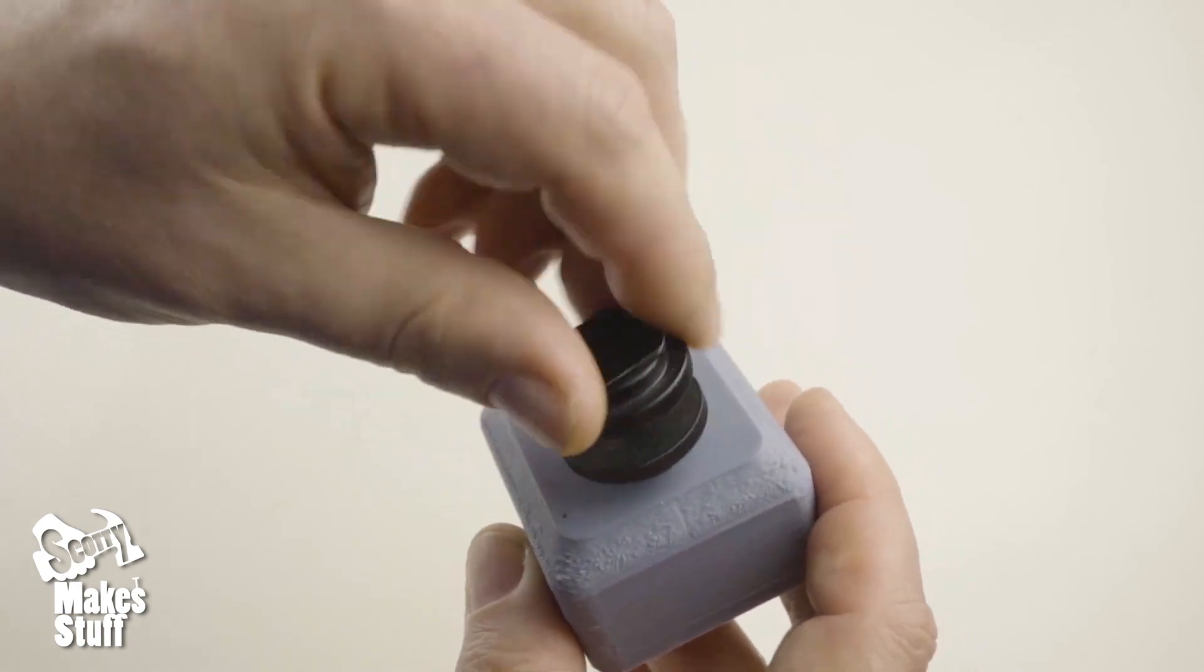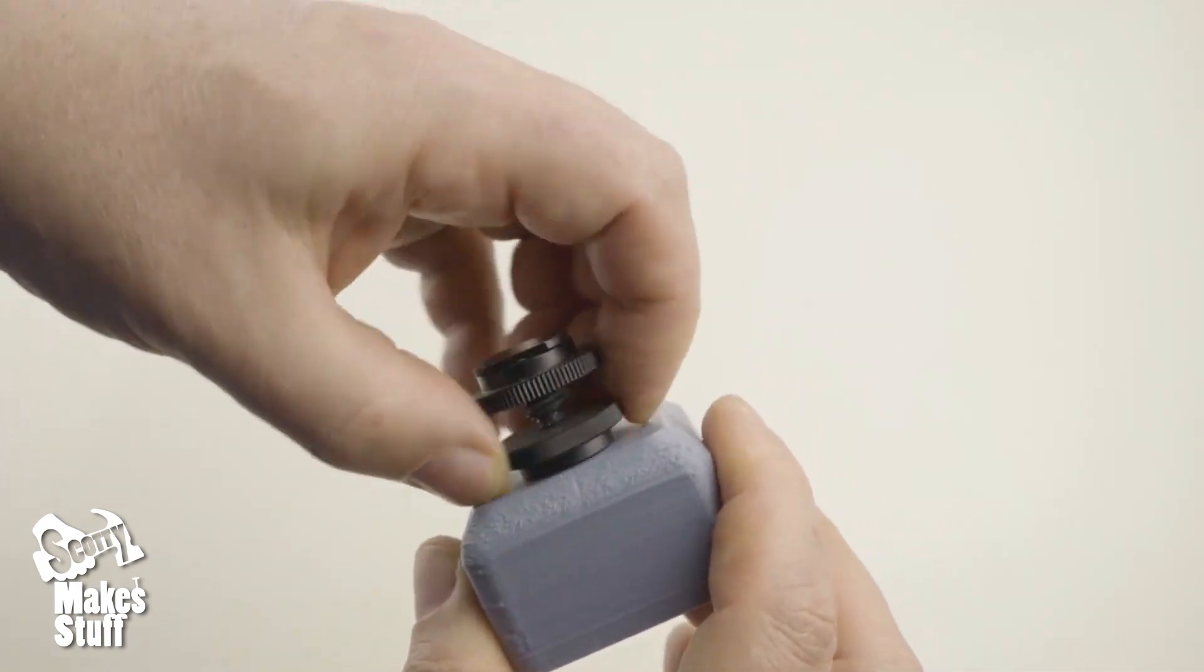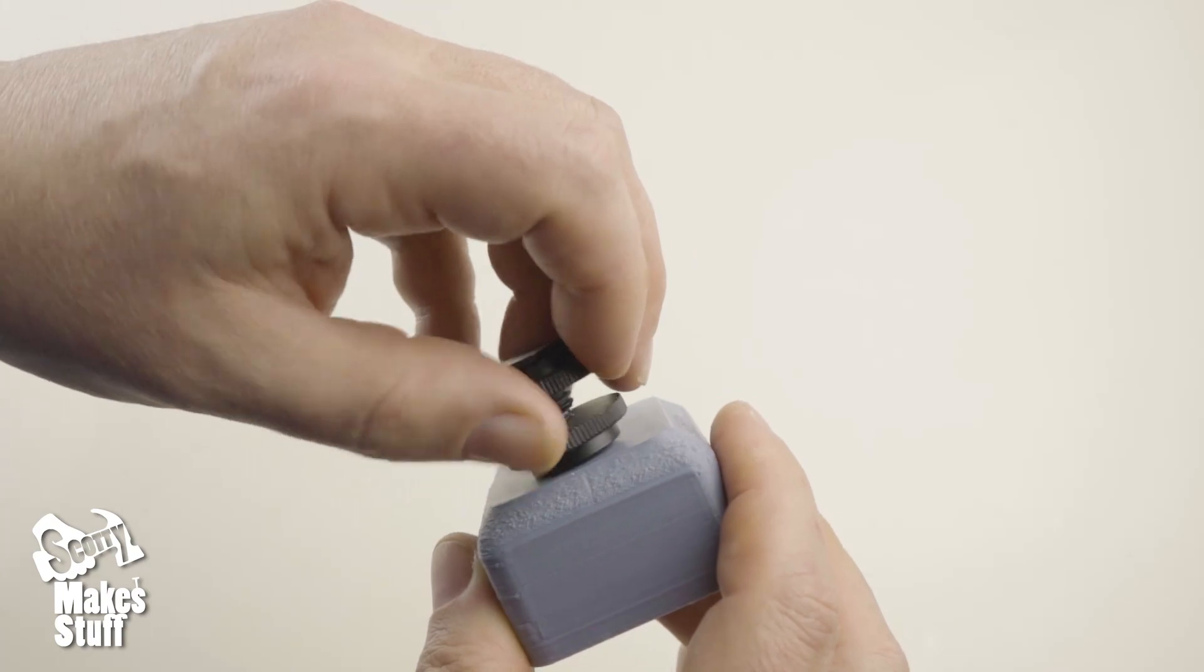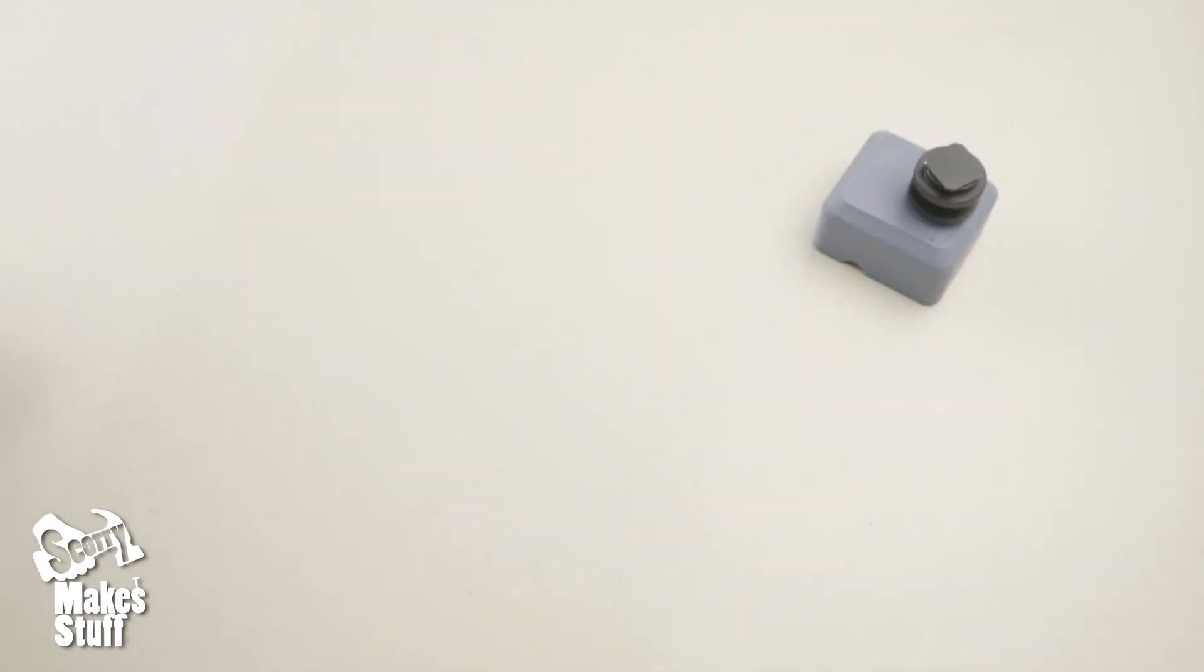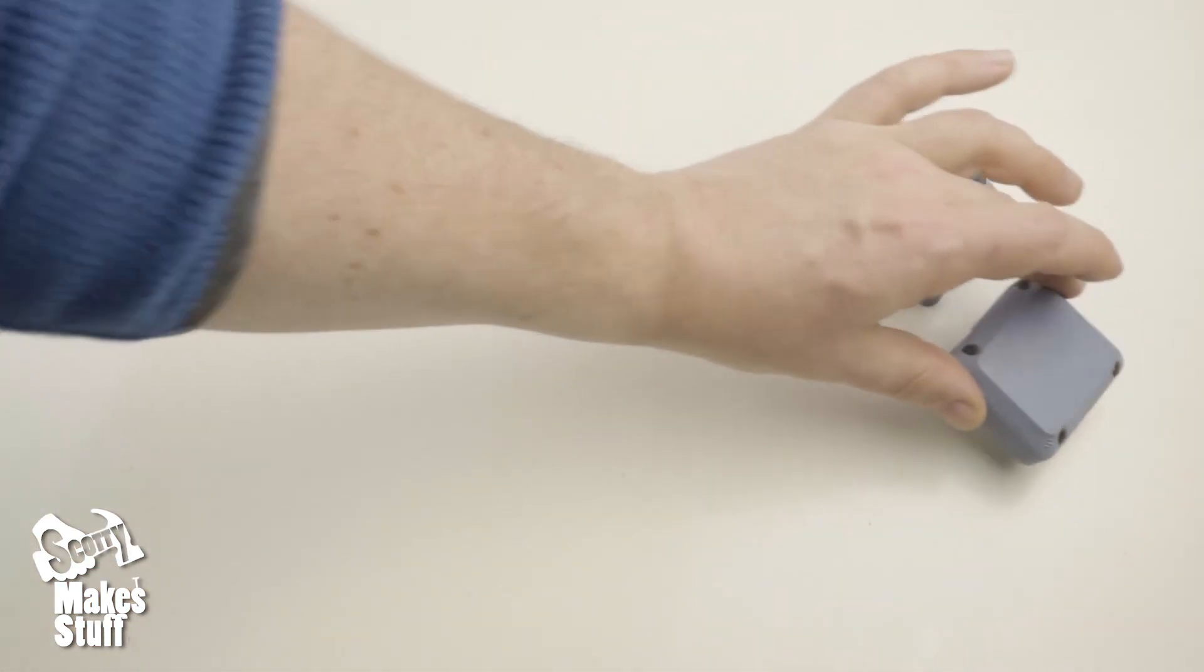Now screw in the hot shoe mount. Add the screws that were removed from the dimmer originally.